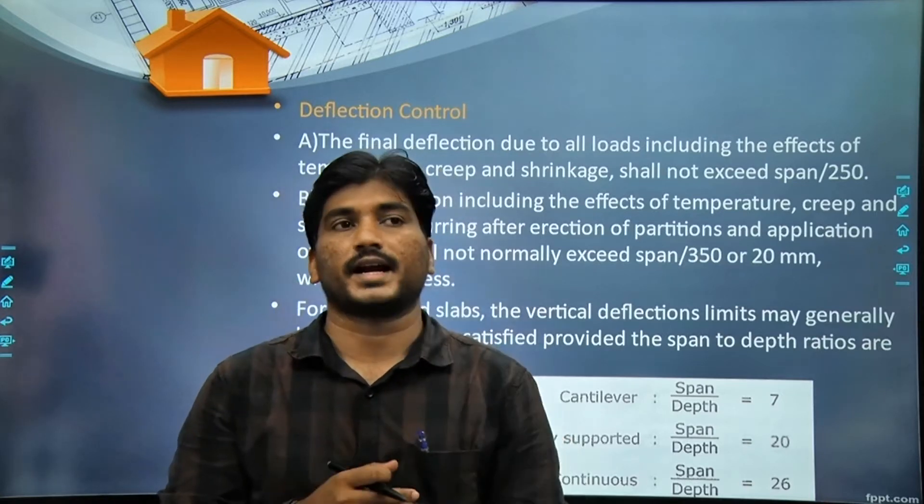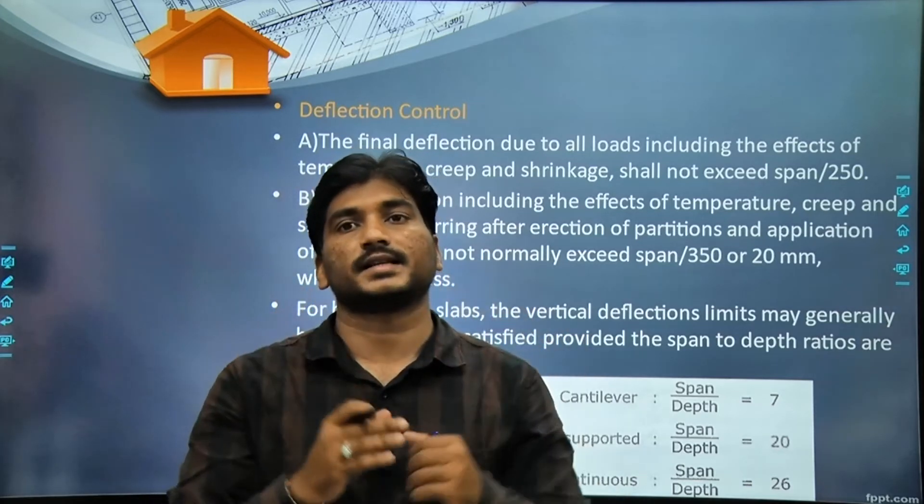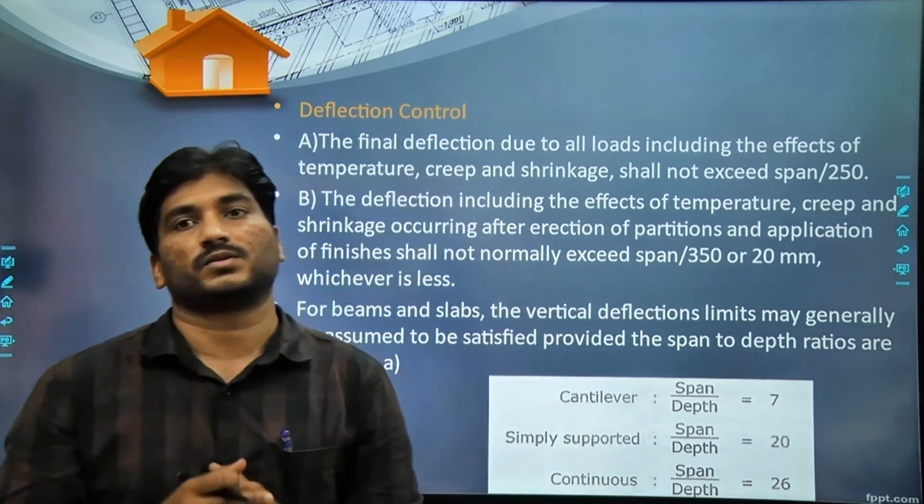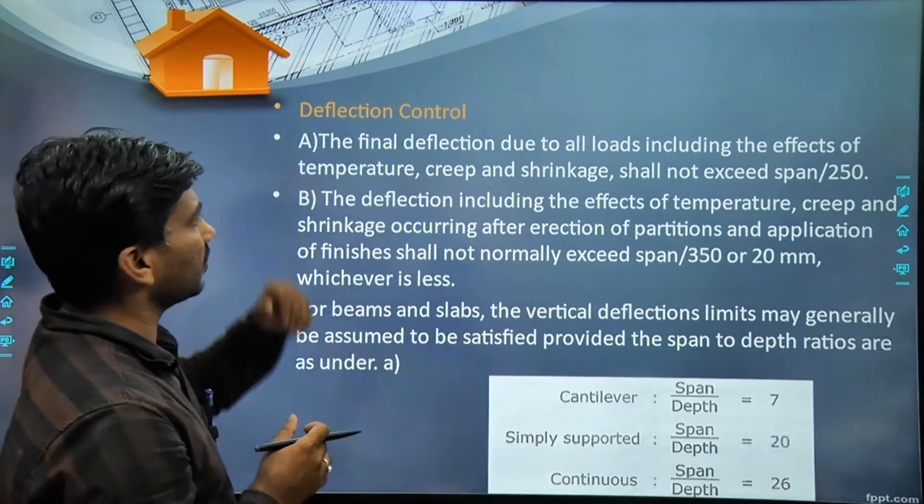Visible by our naked eyes means without any machine, if we look with our naked eyes, the deflection should not be visible. For this, IS code has given some clauses.